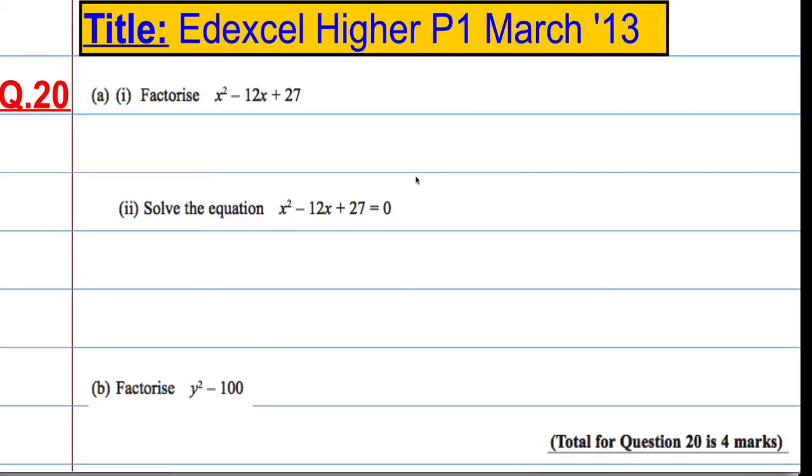Right, so question 20, a little bit more algebra. We're asked to factorise x squared minus 12x plus 27.